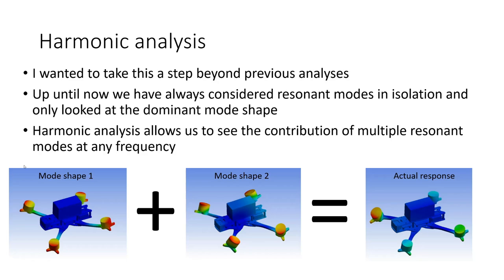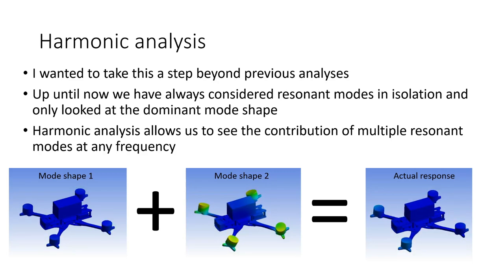So here's an example. We have two resonant modes that are close to a frequency of interest. A first mode shape that looks like this, and a second mode shape that looks like this. And you can see that they're very different mode shapes. If we wanted to consider what the actual response of the quadcopter looks like, we have to take into account the fact that it's moving in both of these ways simultaneously. And that gives us a response that looks like this. You can see it's sort of a combination of the two mode shapes.